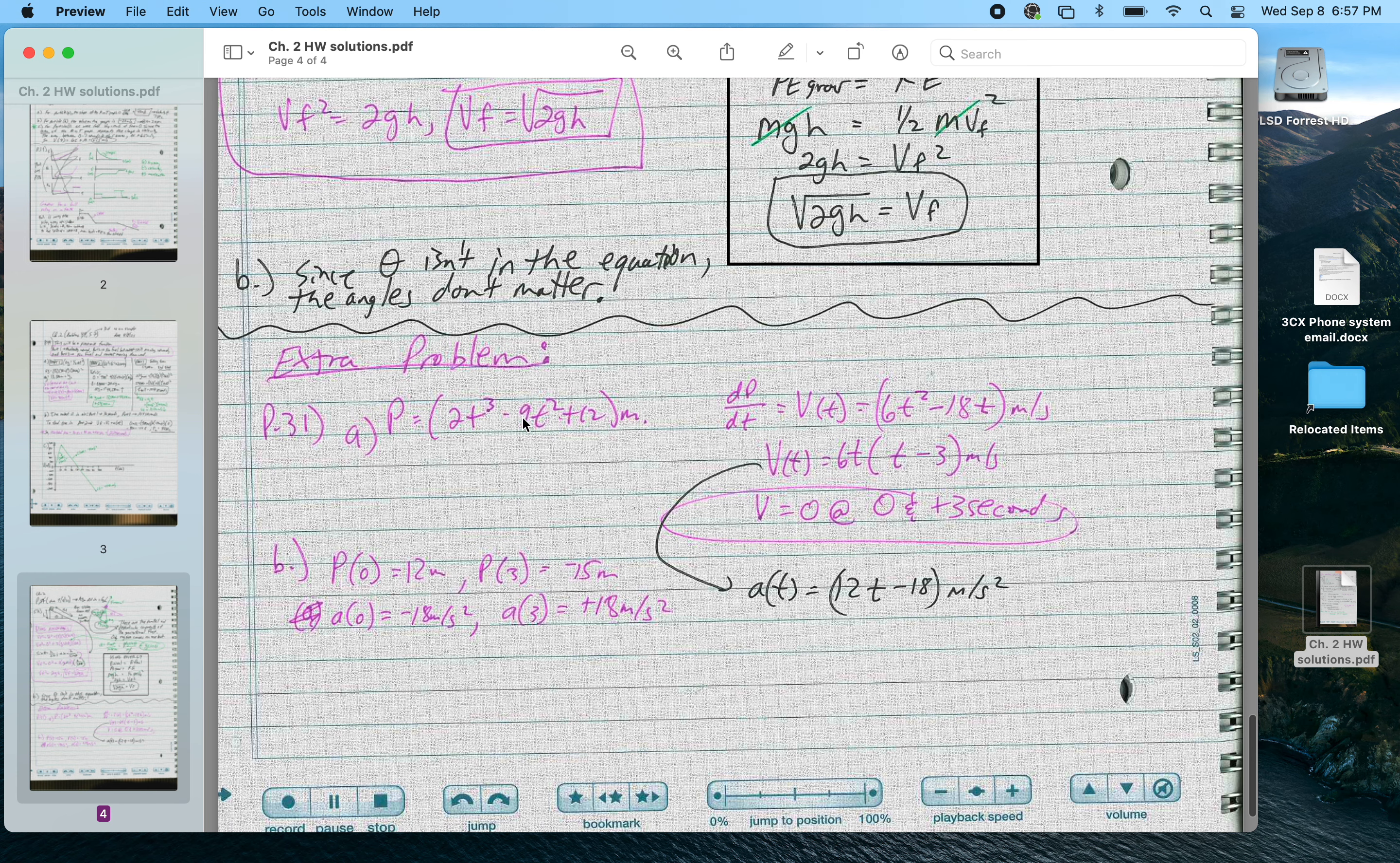The final thing I'm going to do is a little extra bonus problem. It was P31. It gave a position function, 2t cubed minus 9t squared plus 12 meters. And it was asking you to find the velocity and acceleration at two points in time, which was 0 and 3 seconds. So I used change in position with respect to time for my velocity equation. That's 6t squared minus 18t meters per second.